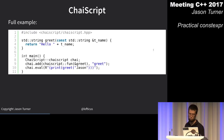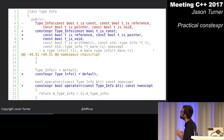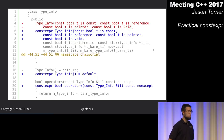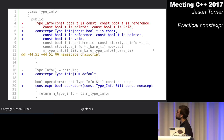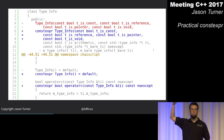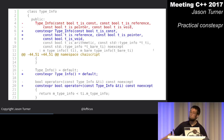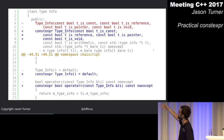I started going through and applying constexpr to ChaiScript everywhere I could without changing any code. This is my type_info object — ChaiScript being a scripting engine has to do lots of runtime type comparisons, so I made the constructor constexpr because everything passed into it is a literal type.